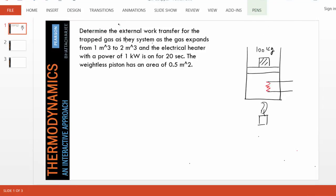In this problem, the gas inside a piston cylinder assembly is being heated by a candle. We also see an electrical resistance heater turned on for 20 seconds, and as a result the piston moves up and the gas volume increases from 1 meter cube to 2 meter cube. We are asked to find the external work transfer with the system being the gas inside.